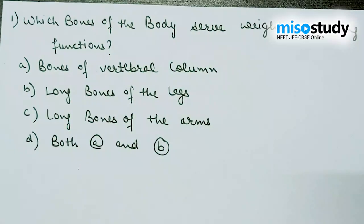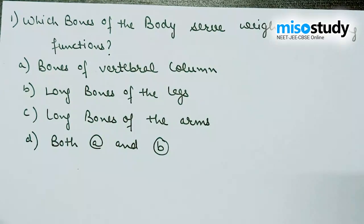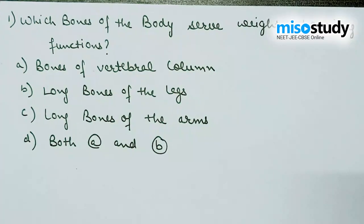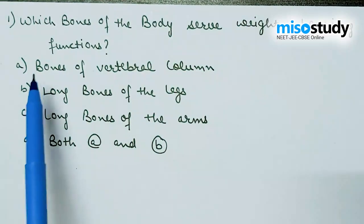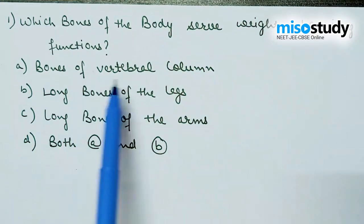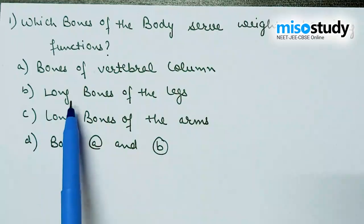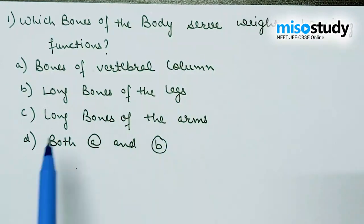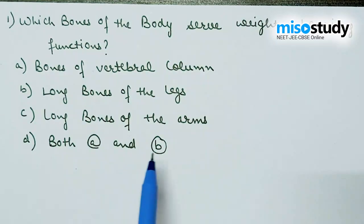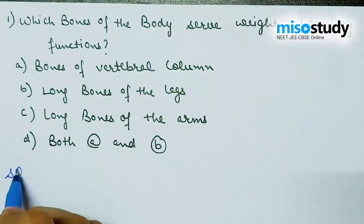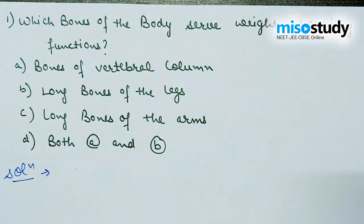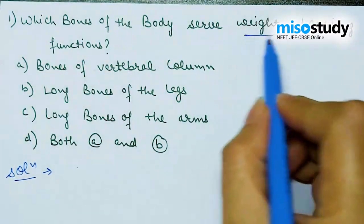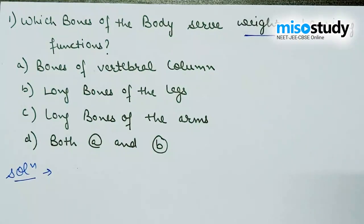The first question is: which bones of the body serve weight-bearing functions? The four options are: A) bones of the vertebral column, B) long bones of the legs, C) long bones of the arms, and D) both A and B. When we discuss the bones that are focused on bearing body weight...